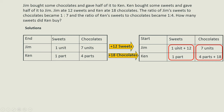So in other words, we get two equations: 1 unit plus 12 equals 1 part, and 7 units equals 4 parts plus 18. We now have two equations to work with.